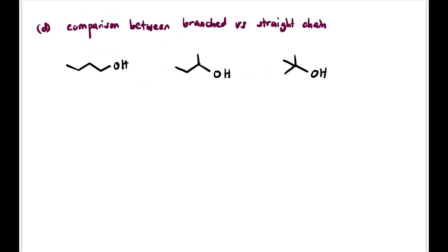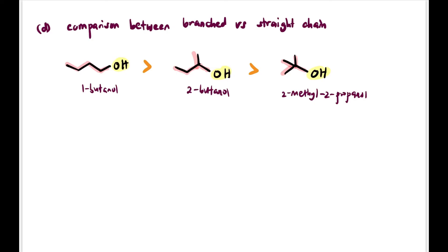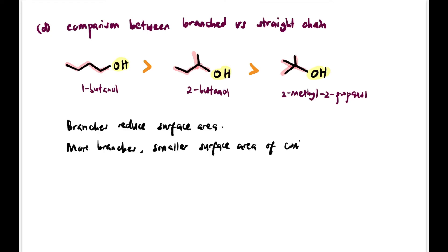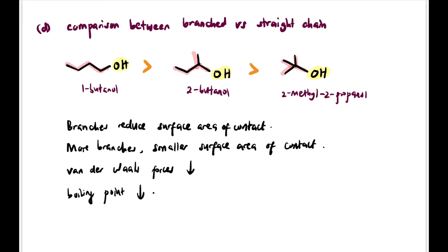Comparing straight-chain and branched alcohols — 1-butanol, 2-butanol, and 2-methyl-2-propanol (primary, secondary, tertiary) — 1-butanol has the highest boiling point, followed by 2-butanol, then 2-methyl-2-propanol. Branches reduce the surface area of contact; more branches means smaller surface area, weaker van der Waals forces, and lower boiling point. The hydrogen bonding is equal across all three since each has one OH group.